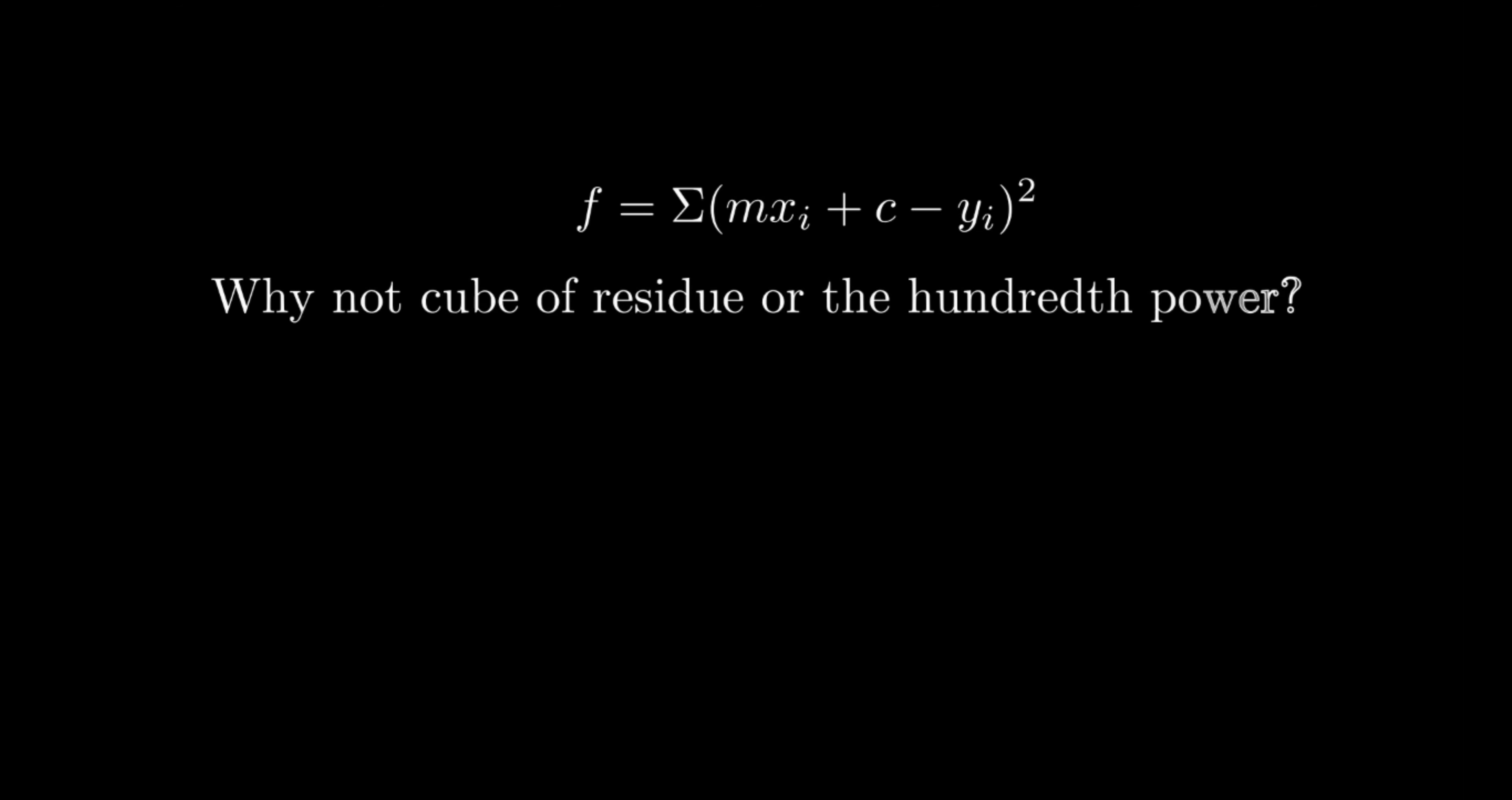Now the other question could be why not use a cubic or a hundredth power of residual summed up? Wouldn't that make a better function or something? Now I'm not completely sure about the answer, and if you do know it, feel free to drop it in the comment section. But here's my best guess: the outliers will get a very large value if we raise the residuals to a very high power. That way residuals will sway the line towards itself. I call that hyper-exaggeration. The other guess would be how square functions work neatly with calculus when you try to minimize the function in the next section.